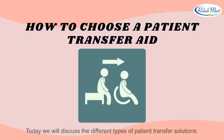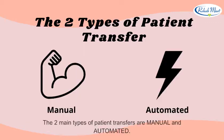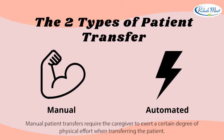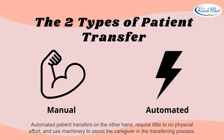Today, we will discuss the different types of patient transfer solutions. The two main types of patient transfers are manual and automated. Manual patient transfers require the caregiver to exert a certain degree of physical effort when transferring the patient. Automated patient transfers, on the other hand, require little to no physical effort and use machinery to assist the caregiver in the transferring process.